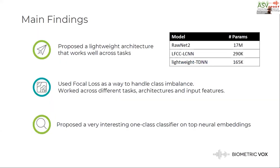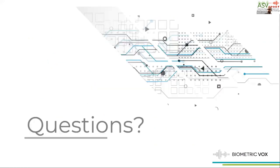To summarize: we propose a lightweight architecture that works well across both tasks, even though it has a smaller number of parameters than the other architectures. We successfully used focal loss as a way to handle class imbalance, and it worked well across different types of architectures and input features. Finally, we propose what we think could be a very interesting one-class classifier on top of neural network embeddings. Thank you very much.